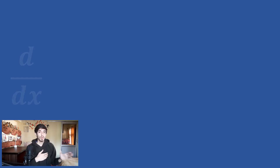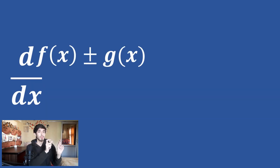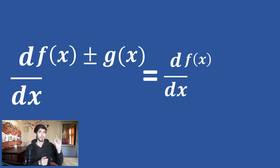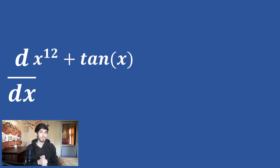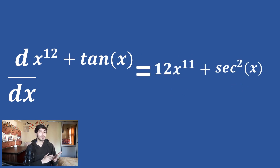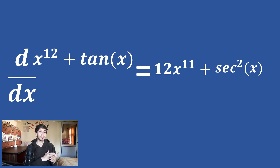Now let us get familiar with some of the most important rules and simultaneously solve some questions. Differentiation of a function plus or minus some other function is simply the differentiation of the first function plus or minus the differentiation of the second function. For example, differentiation of x raised to the power 12 plus tan x is 12x raised to the power 11 plus sec squared x.